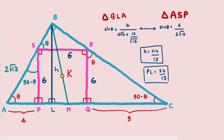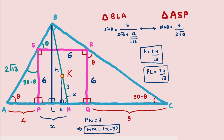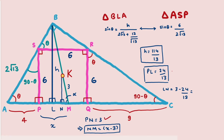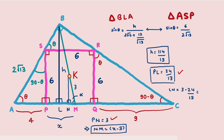We draw a perpendicular from the center K to the base of the square and call the intersection point N. Since K is the center of the square, KN = 3. We let angle KMP = alpha and let PM = X. Since KN is a perpendicular bisector of PQ, we get PN = 3 cm. Therefore NM = X - 3. Now LN = PN - PL = 3 - 24/13 = 39/13 - 24/13 = 15/13.